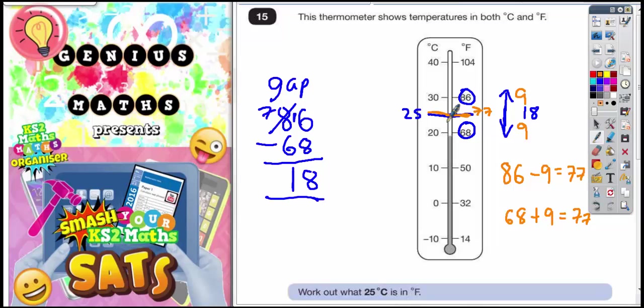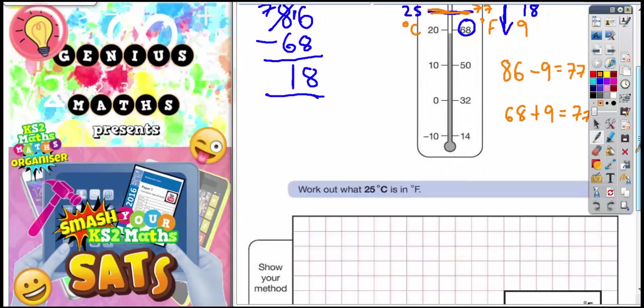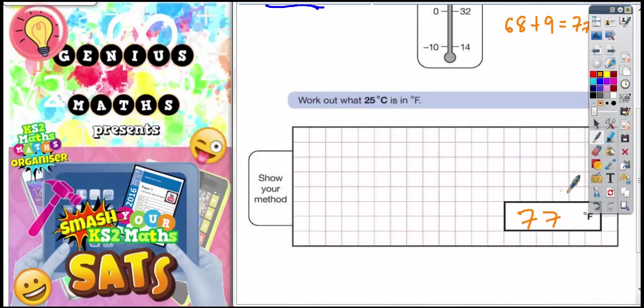Therefore, halfway between 86 and 68 is 77, which would be level with halfway between 20 and 30, which is 25. So on this side we've got our 25 degrees C, and on this side we've got our 77 degrees F. So the answer is going to be 77 degrees F.